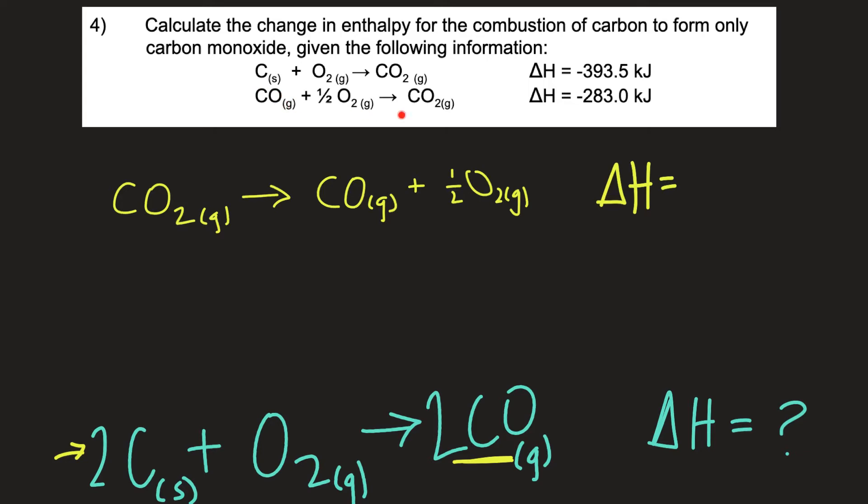I've recopied the first puzzle piece which is the second reaction and I flipped it. So the product is now the reactant. If I go to write down the delta H because I flipped the reaction I'm going to make that a positive instead of a negative sign. So positive 283. I'm going to forgo the point zero for now.